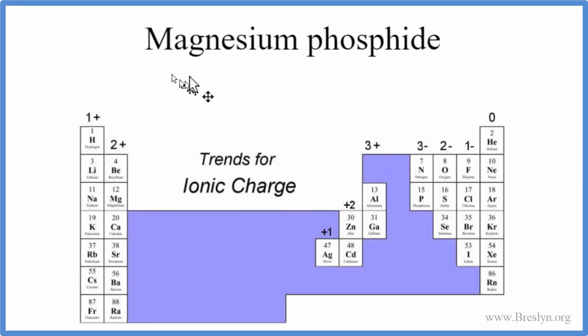In this video, we'll write the formula for magnesium phosphide. Magnesium, right here in the periodic table, that's a metal. Phosphorus, that's a non-metal. So we have an ionic compound.